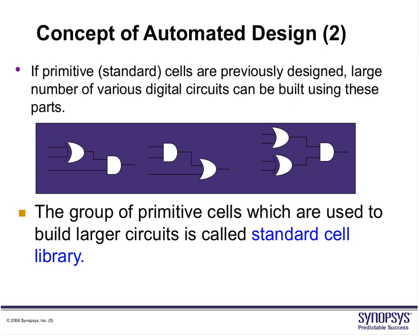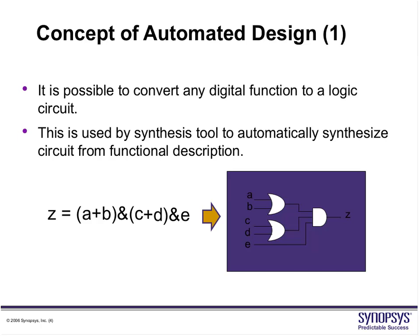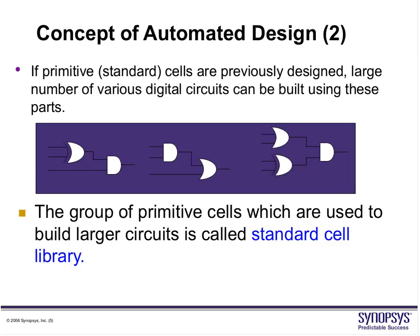We are assuming some things here. One thing is that standard cells — like the OR gates and the 3-input AND gate in the previous example — already exist. If primitive standard cells are previously designed, we have a library which contains all these cells with their functional descriptions, timing specifications, and layouts. We could build a large number of various digital circuits using these parts. The group of primitive cells used to build larger circuits is called the standard cell library.